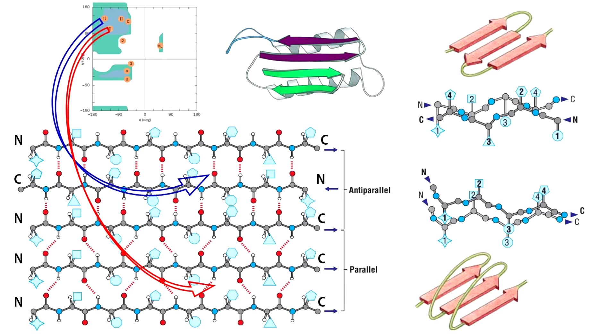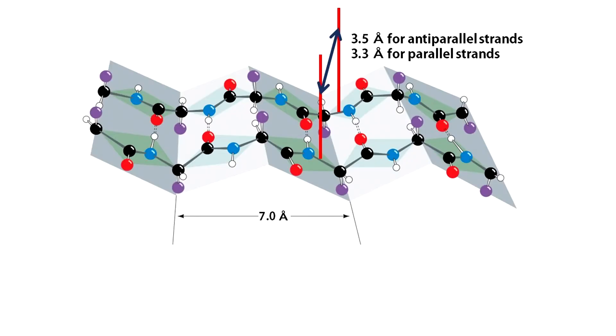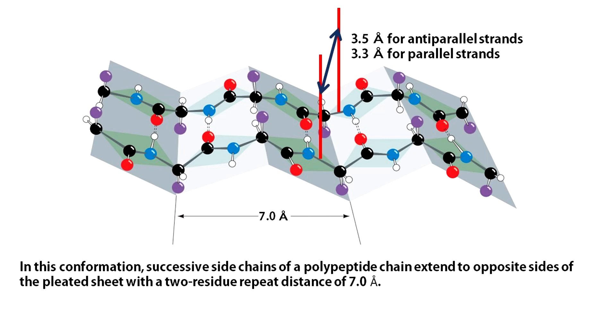Generally, parallel beta sheets exhibit minus 119 degree phi and 113 degree psi angles, whereas anti-parallel beta sheets exhibit minus 139 degree phi and about 135 degree psi angles. Beta sheets have a rippled or pleated edge-on appearance. In this conformation, successive side chains of a polypeptide chain extend to opposite sides of the pleated sheet with a two residue repeat distance of 7 angstrom.